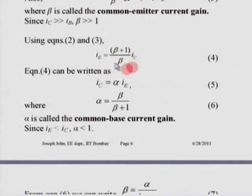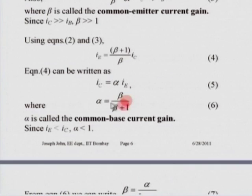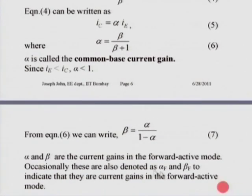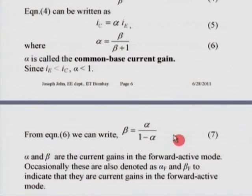Combining these expressions, we can write I_C = α × I_E, where α = β / (β + 1). α is called the common base current gain. Since I_E is greater than I_C, α will always be less than 1. The relationship between β and α is written as β = α / (1 − α). Since β is typically in the order of 50 to 200, most of the time α will be almost equal to unity.